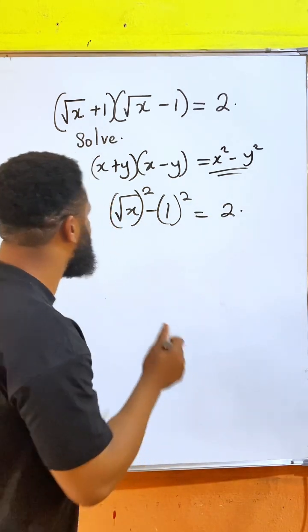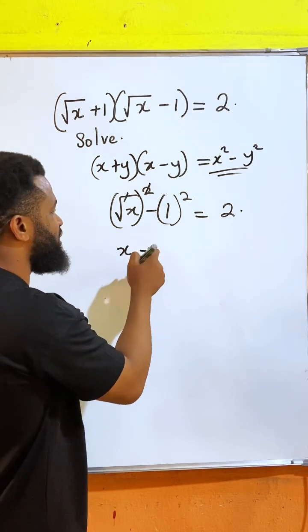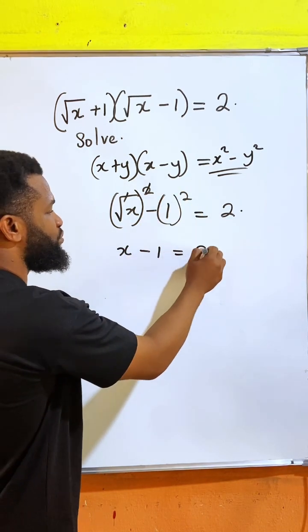So if I do this, this is going to cancel. I'll have x minus 1 equal to 2.